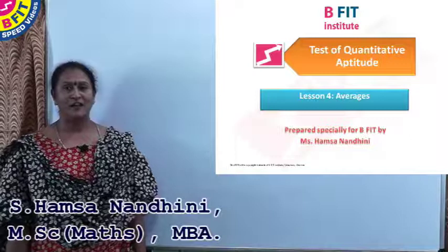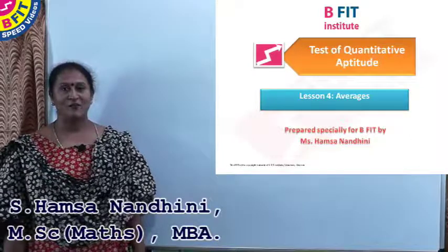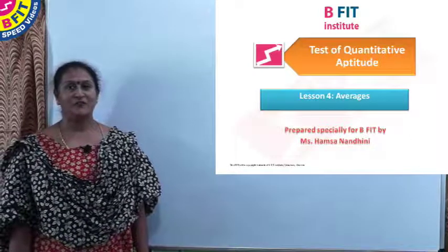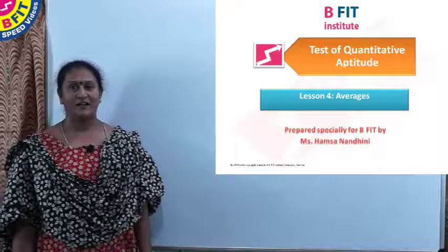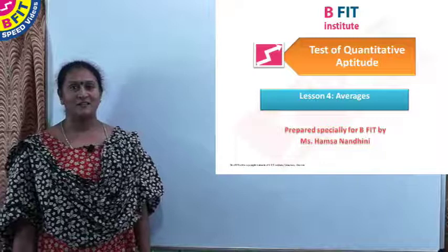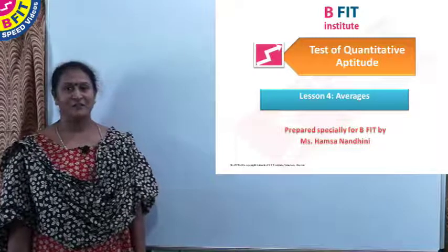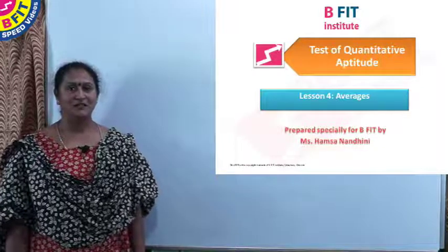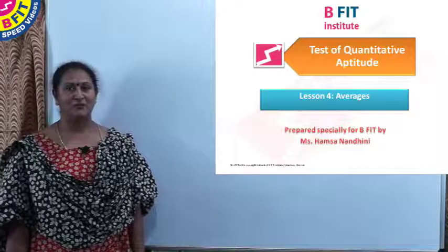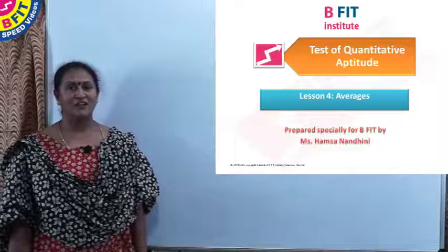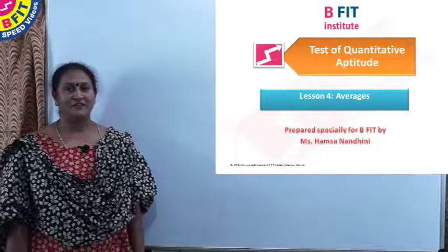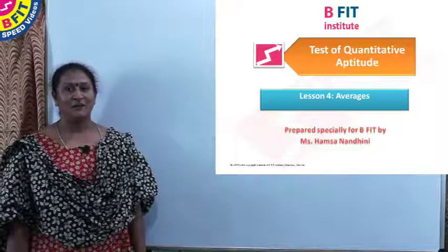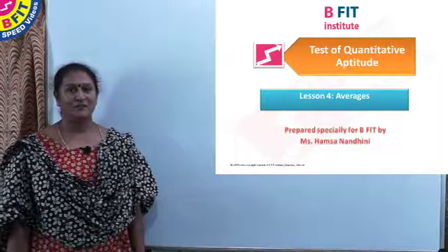For any average, it always lies between the range of the given data, where range is the difference between the maximum value and the minimum value. So to find the average, we add all the terms and divide by the number of terms.